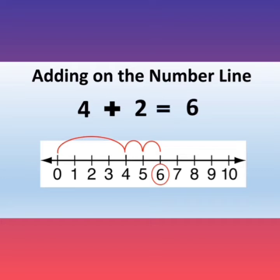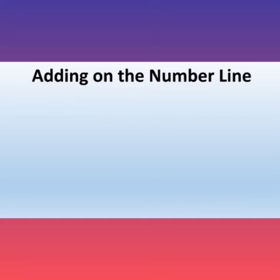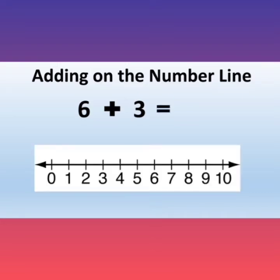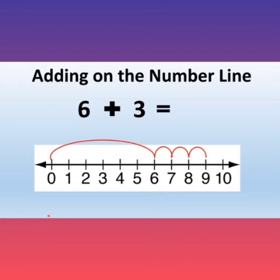Let us look at another example. The next question is 6 plus 3 is equal to how much? This is a number line. The first number given to us is number 6. So we will take a pencil to 0 and take a big jump from 0 to 6. The next number is 3. So we have to add 3 to 6. So we will take 3 small jumps to the right: 1, 2, 3. So now which number have we reached, children? We have reached number 9. So we will circle number 9. So the answer of 6 plus 3 is equal to 9.